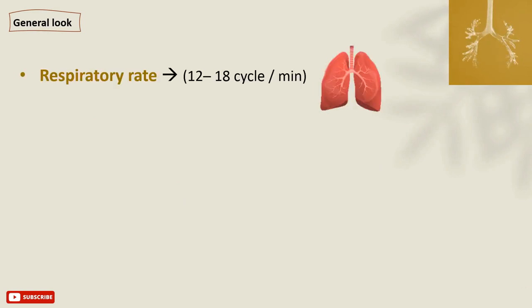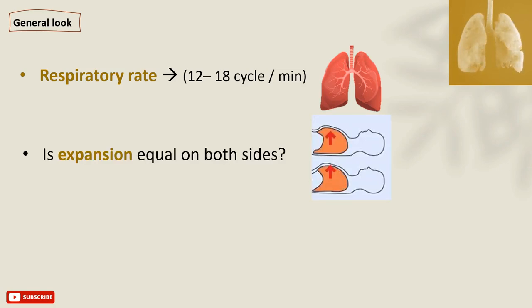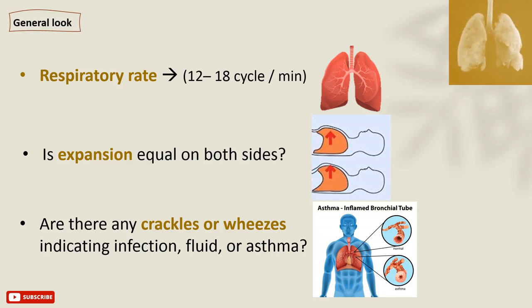Then we examine the respiratory system, starting with the respiratory rate. A normal respiratory rate ranges between 12 to 18 cycles per minute, where a cycle is a total of one inhalation and one exhalation. Inspect the chest expansion to ensure it is equal on both sides. Then use a stethoscope to recognize any abnormal sounds of breathing, like crackles or wheezing, because they could indicate infection, fluid, or asthma.